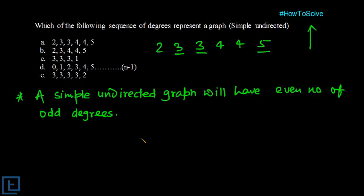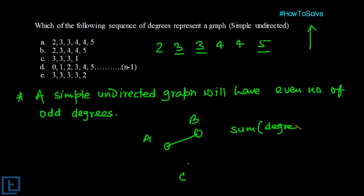Let's understand why this condition exists. Say there are vertices a, b, c. Each edge contributes to two degrees — here and here. So whatever the number of edges, the sum of degrees will always be even. If we had an odd number of odd degrees, the sum would become odd, which is not possible. So odd degrees are allowed, but the number of odd degrees must be even. This means option one is wrong — we discard it.